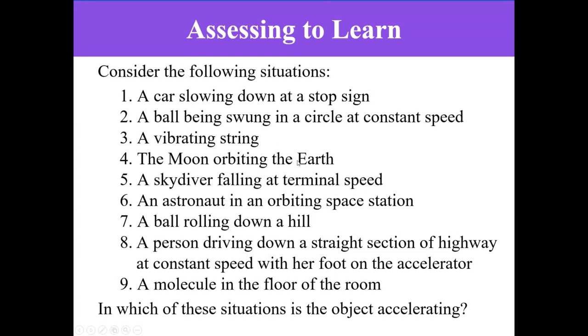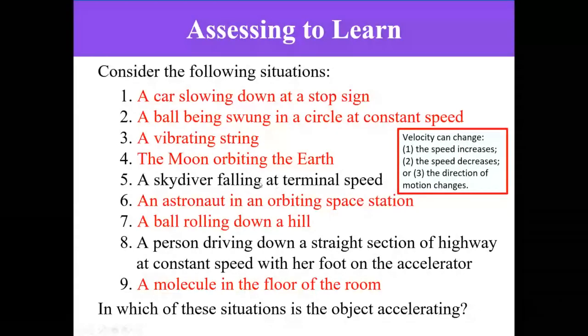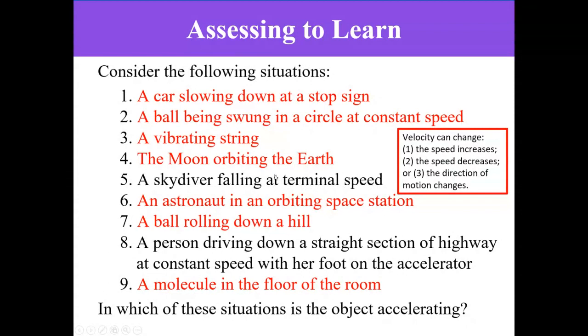A skydiver falling at terminal speed. Terminal speed means constant speed, means no acceleration. At this position, you will have the air resistance up equal to the gravitational attraction down. And therefore, the acceleration is zero. When the net acceleration is zero, the speed will be constant, which we call terminal speed. So here there is no acceleration.